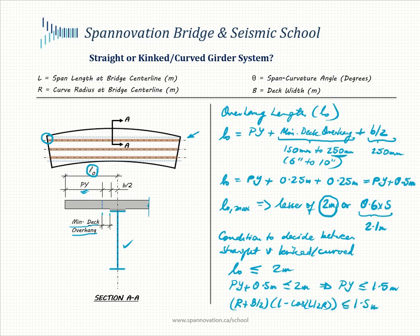So if you have a curved span and know the radius, deck width, and span length, you can use this condition — (R + B/2)(1 − cos(L/2R)) ≤ 1.5 m — to decide whether straight girders are feasible or whether you need to resort to a kinked or curved girder system.